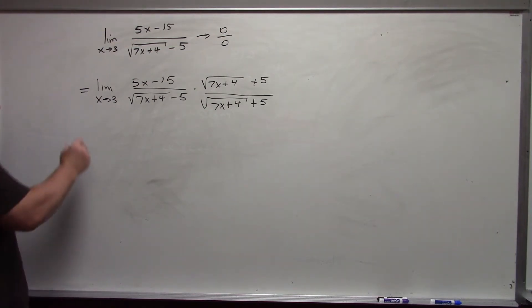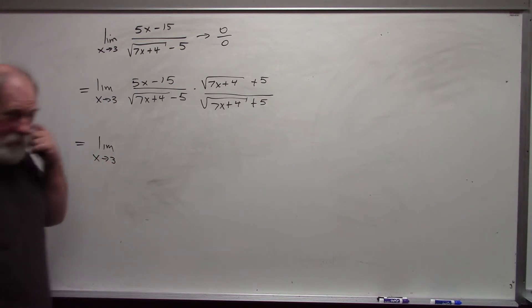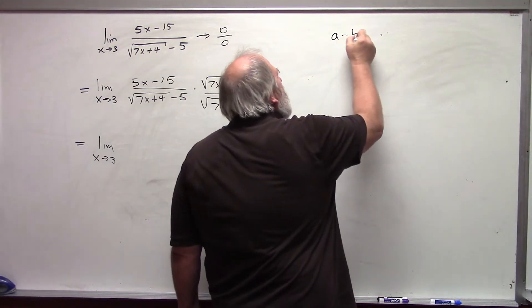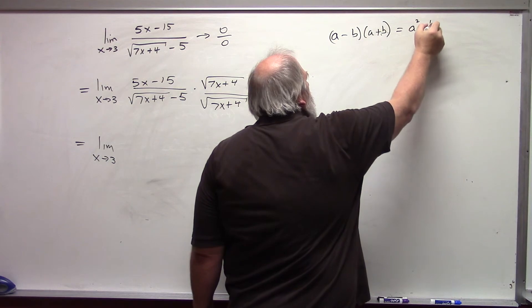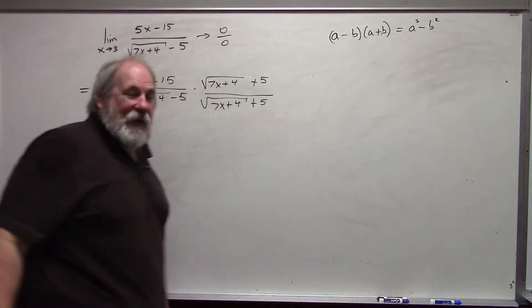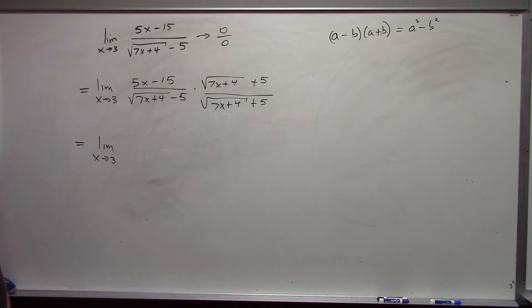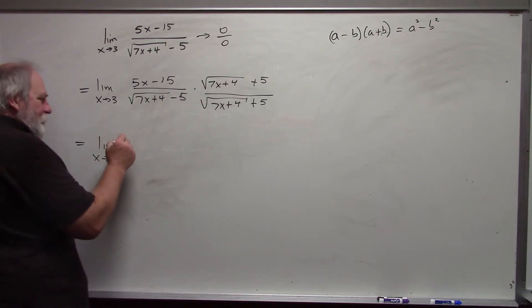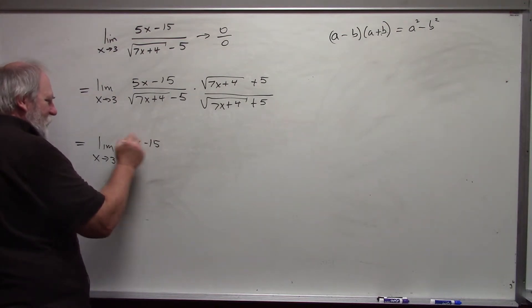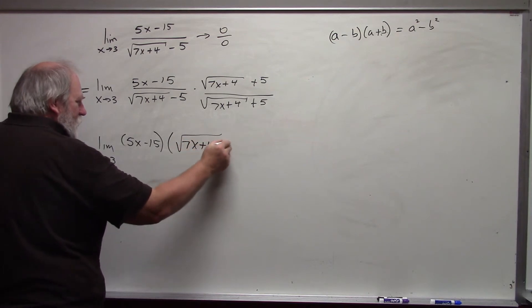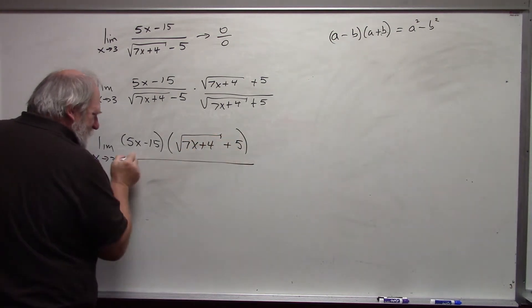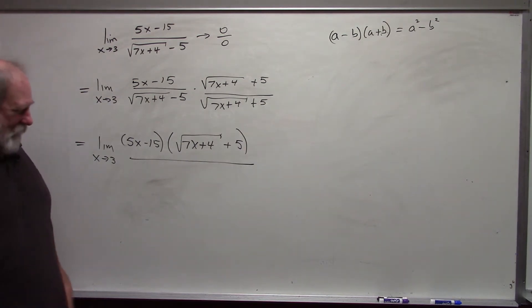So, I'll start with the denominator. My denominator has the form a minus b times a plus b, which we all know yields a squared minus b squared. That is why we choose to multiply in that form. So, in this case, I get 5x minus 15 times the square root of 7x plus 4 plus 5. Don't distribute that through. We're going to end up reducing things, so just leave it like that.